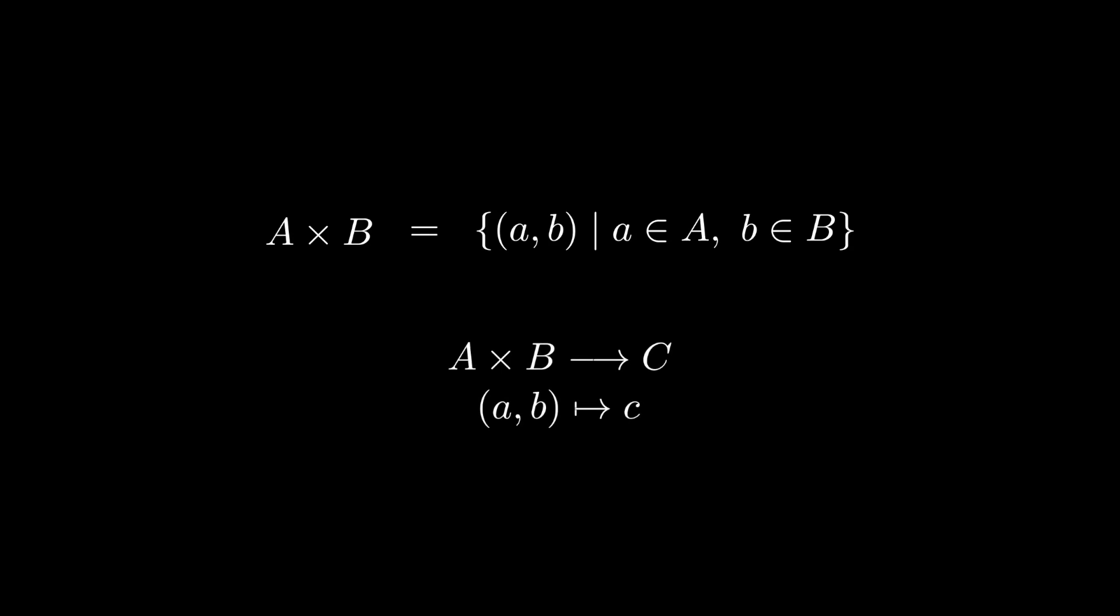In type theory, we do the opposite. That is, declare that to define f, it suffices to define f on pairs a comma b. And then we can deduce that every element of A times B is equal to a pair little a comma little b. Let's break that down in more detail.